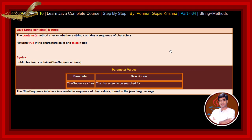Java string contains method. The contains method checks whether a string contains a sequence of characters. It returns true if the character sequence exists and false if not. See the syntax: public boolean contains(CharSequence characters). The parameter is the characters to be searched for. The CharSequence interface is a readable sequence of char values found in the java.lang package.